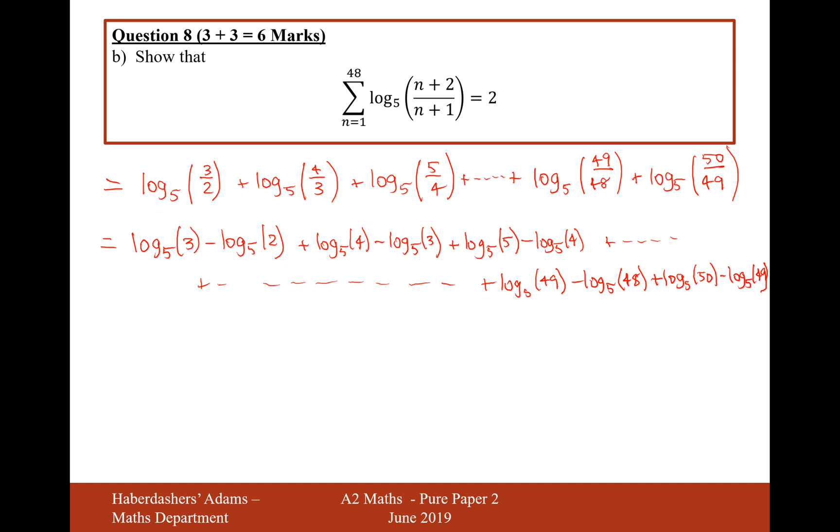And now, a whole bunch of this stuff cancels out. The log 5 of 3 cancels out with the minus log 5 of 3 there. The log 5 of 4 cancels out with the minus log 5 of 4. The next term would contain the log 5 of 5. Log 5 of 49 would cancel out here and here. And log 5 of 48 would cancel out with a term that would appear slightly further back there. So what are we actually left with here?